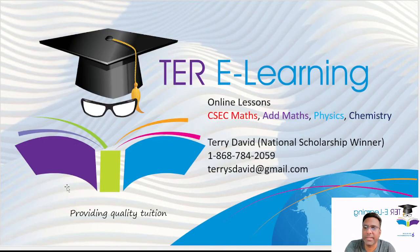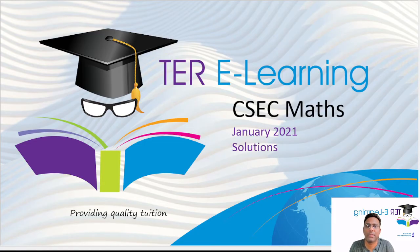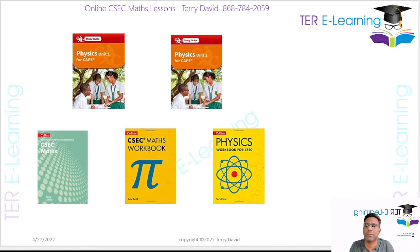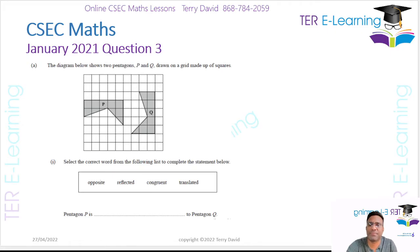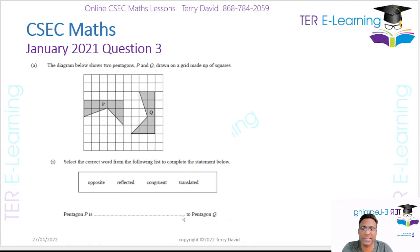In this video I'm going to be looking at the solution to the January 2021 question three. The diagram below shows two pentagons P and Q on a grid made up of squares. We have two shapes, P and Q. Select the correct word from the following to complete the statement: pentagon P is something with pentagon Q.